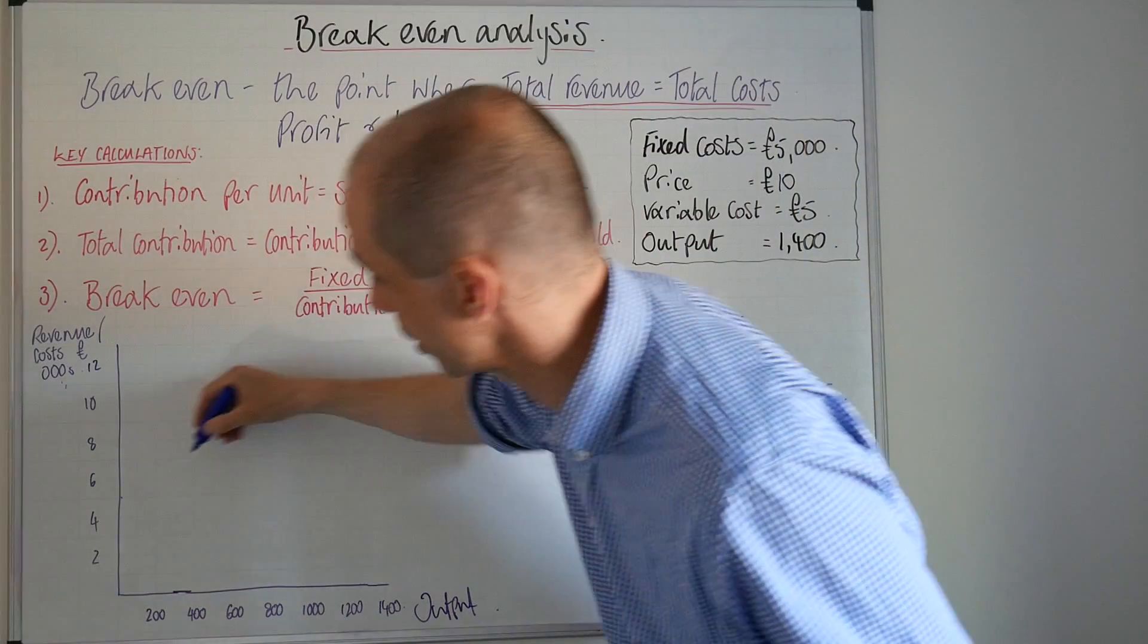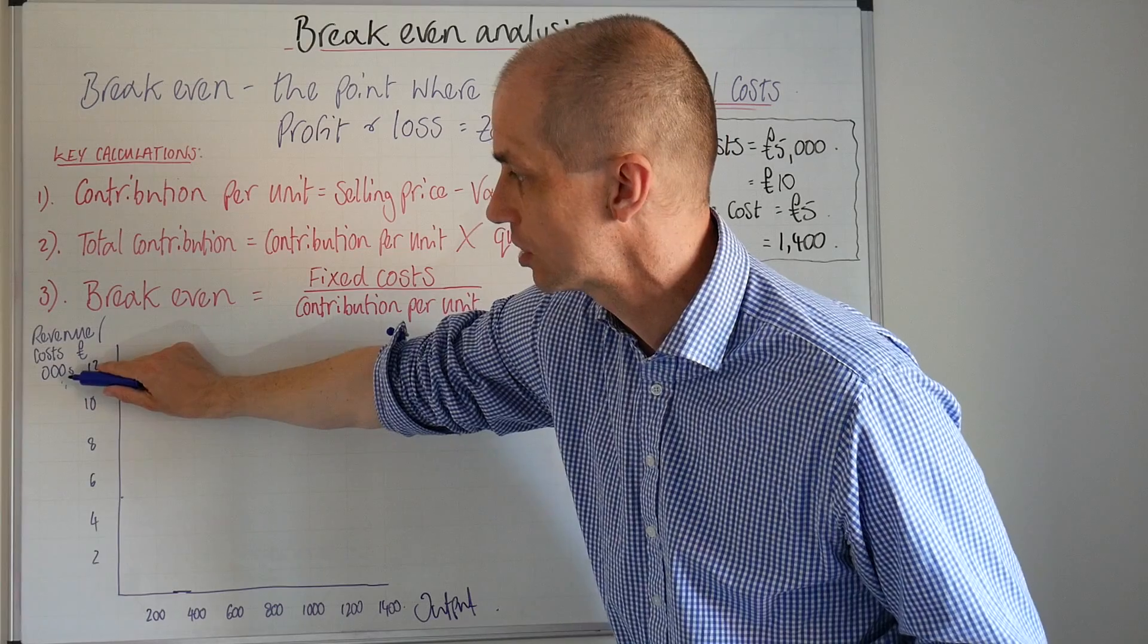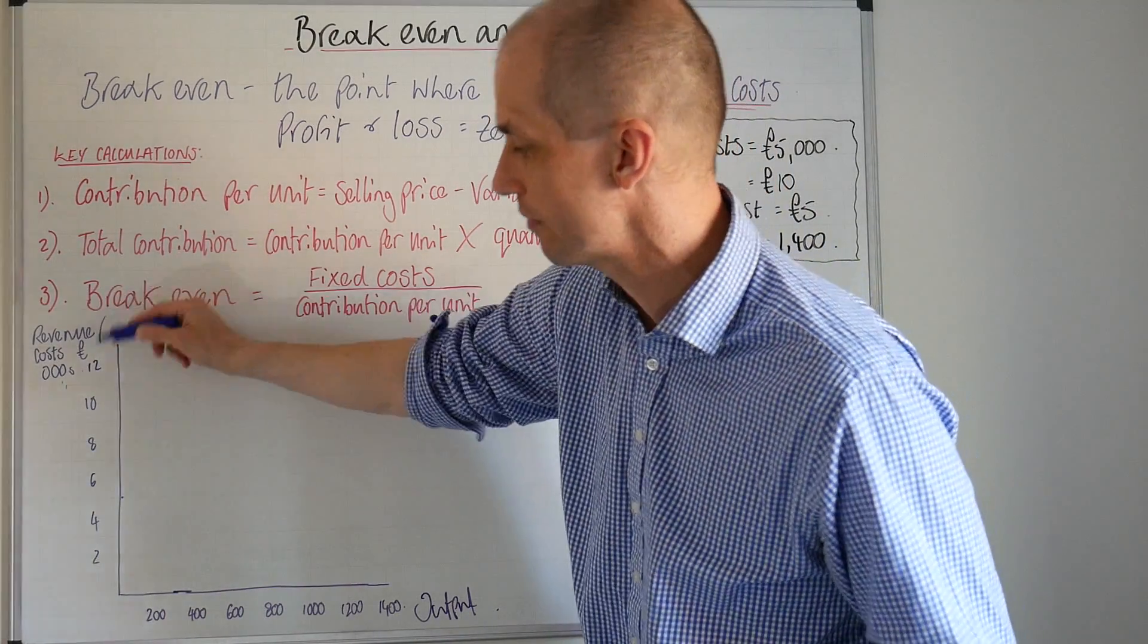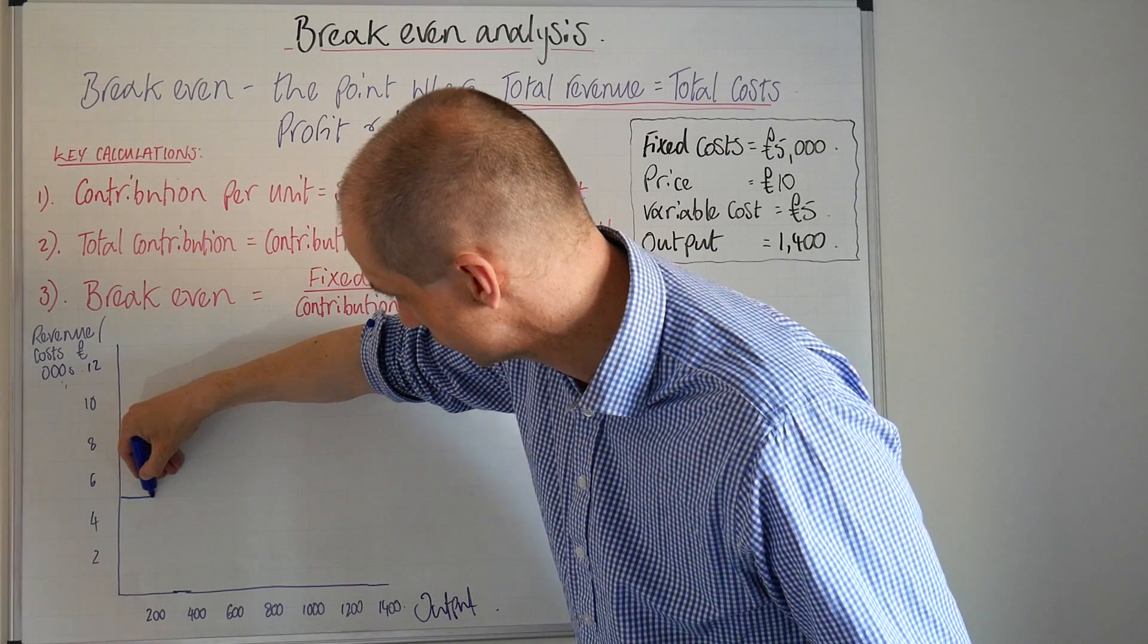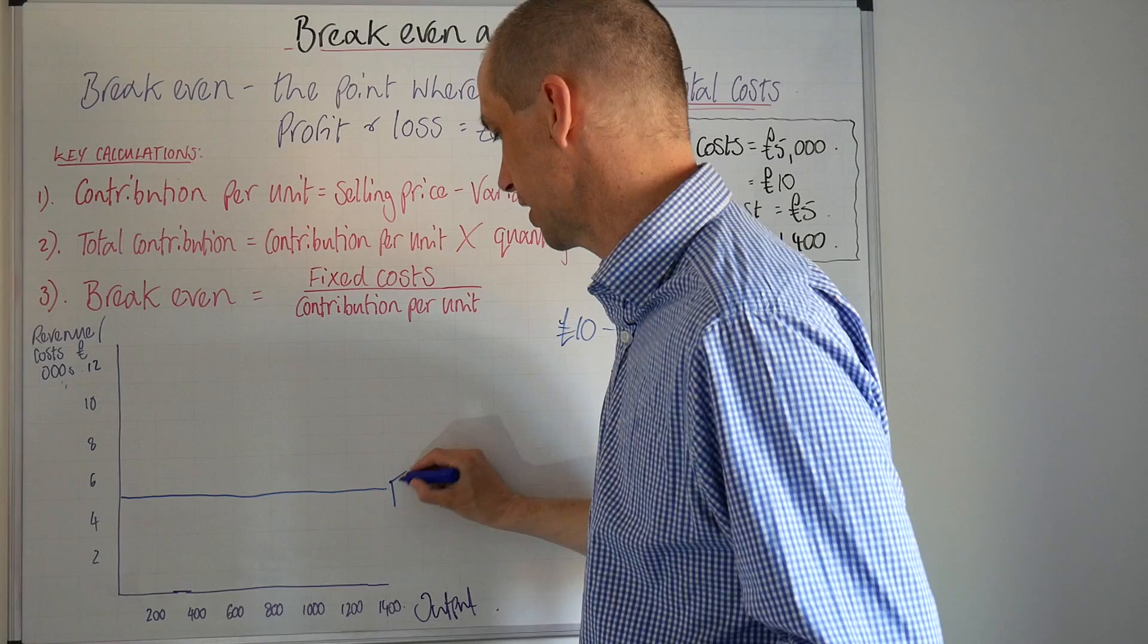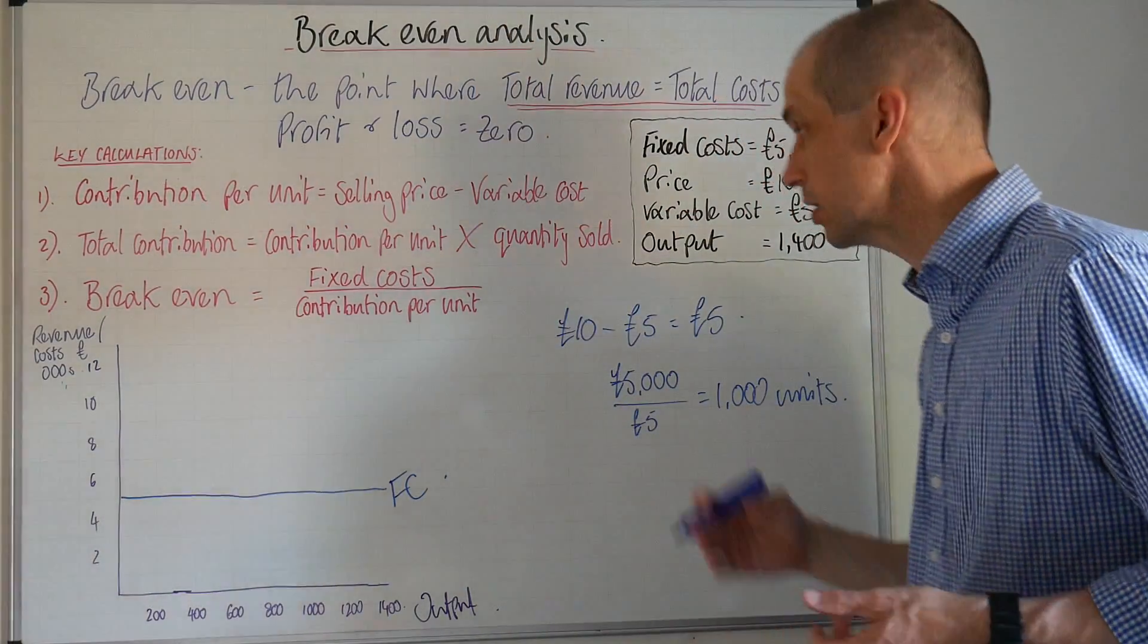First thing you want to do is concentrate on that £5,000 and we can see that five is here, £5,000, this denoted in thousands, and this is our output here, this is our revenue cost. As we put that line in, we can see that that is a fixed cost. So I'll just highlight that as FC, nice and straightforward.